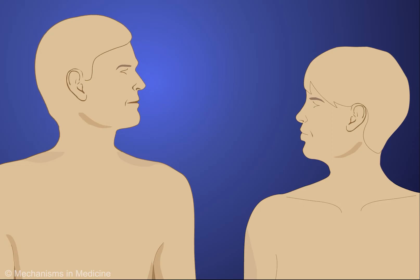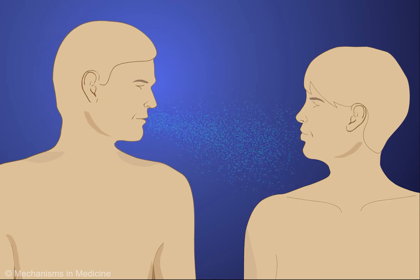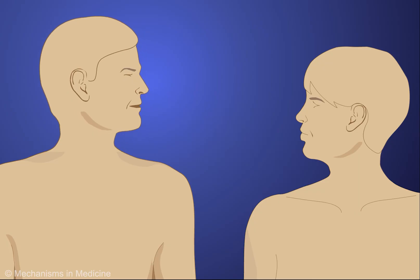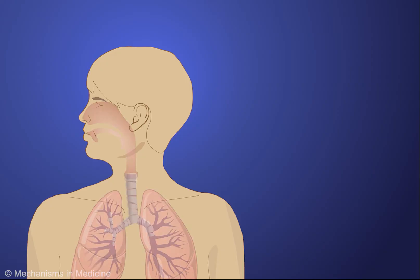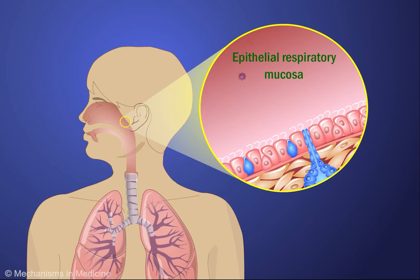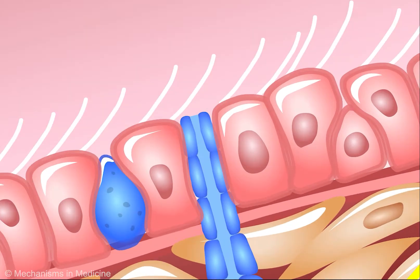Influenza may be transmitted directly from person to person when an infected person coughs or sneezes, or indirectly through contaminated surfaces. Large aerosolized droplets containing the virus may be inhaled or ingested, or may come into contact with the eyes and conjunctiva, mouth, and nasal passages. The virus attempts to colonize the cells in the epithelial lining of the nasopharynx and respiratory mucosa.